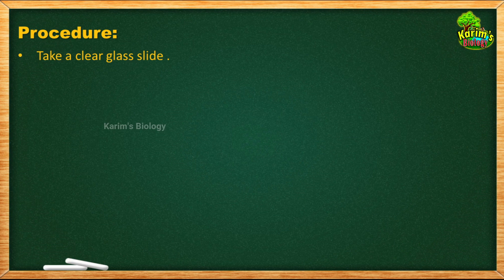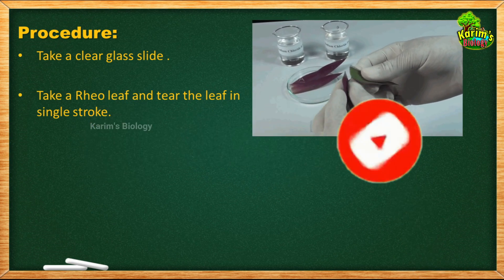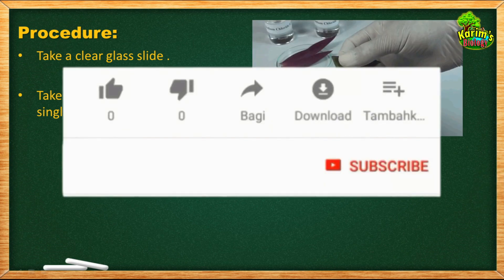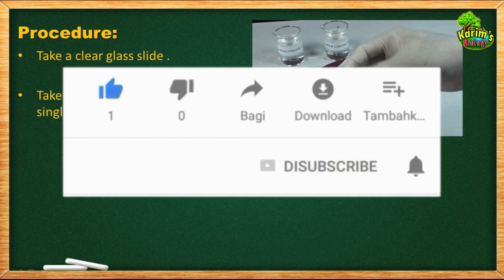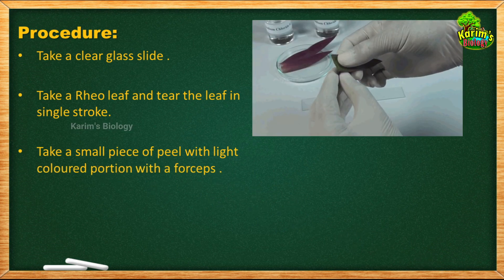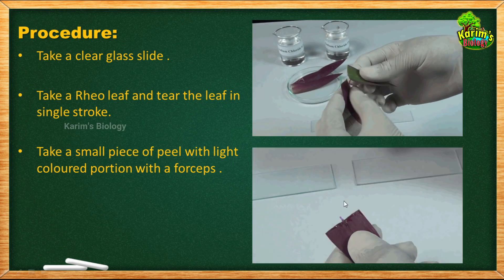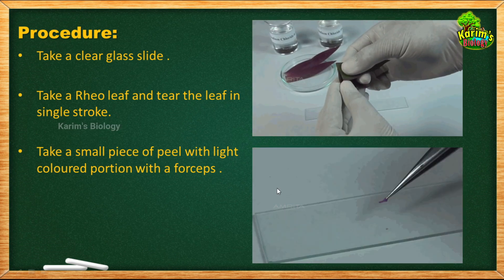For the procedure: first, take a clean glass slide with no spots or damage. Second, take a Rhoeo discolor leaf and separate a single layer of the lower epidermis. To do this, simply break the leaf at the middle and pull the lower part — you will get a thin layer. Take a small piece of peel with a light-colored portion using forceps and carefully place it flat on a slide, making sure there are no folds.